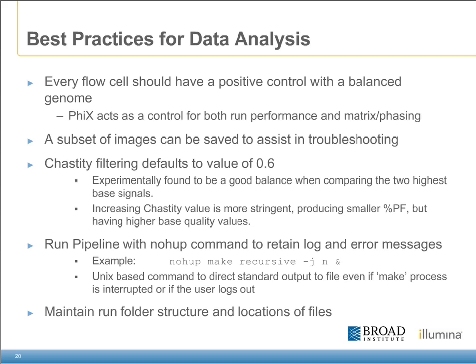The first of these is the use of a positive control with each flow cell. Illumina recommends the use of a Phi-X control lane to ensure run performance, as well as the correct calculations of both matrix and phasing. As our software has continued to improve, the saving of images is no longer necessary. However, a subset of images can be saved to assist in troubleshooting should anything go wrong chemically or with the instrumentation. It's also important to maintain a chastity value of 0.6, which has been experimentally found to have a good balance when comparing the two highest base signals. Although increasing the chastity value is more stringent, it could produce a smaller pass filter number with higher base quality values.